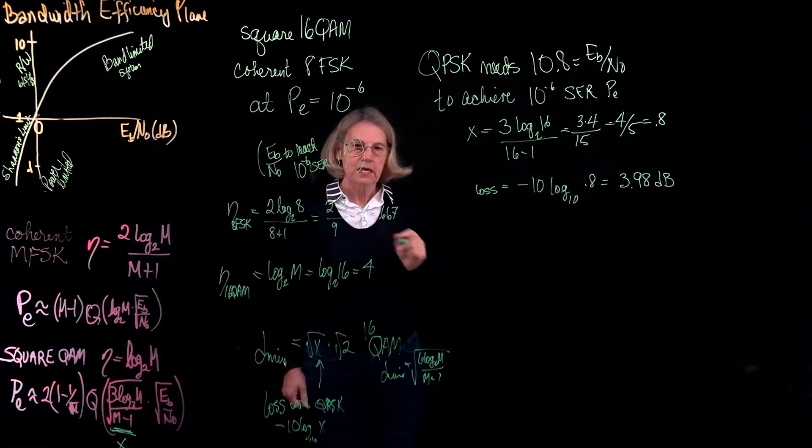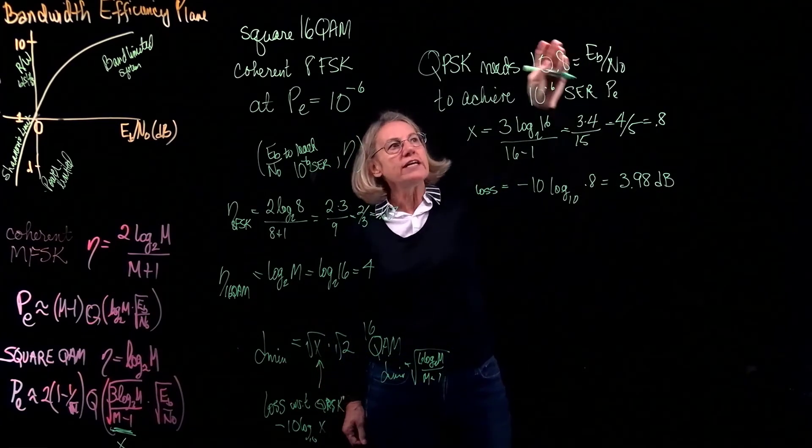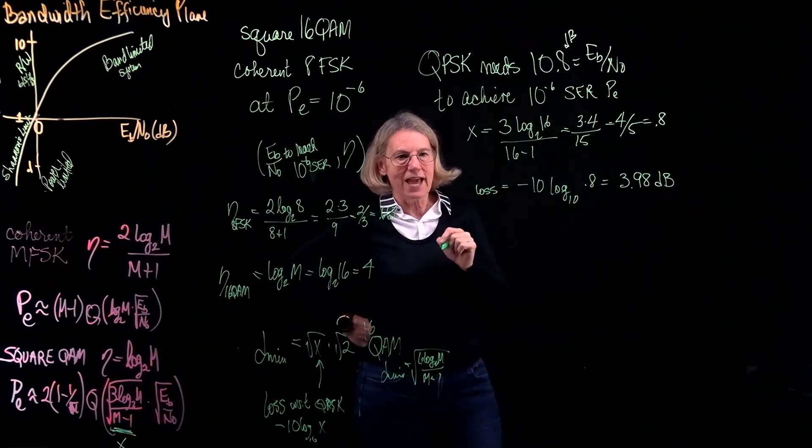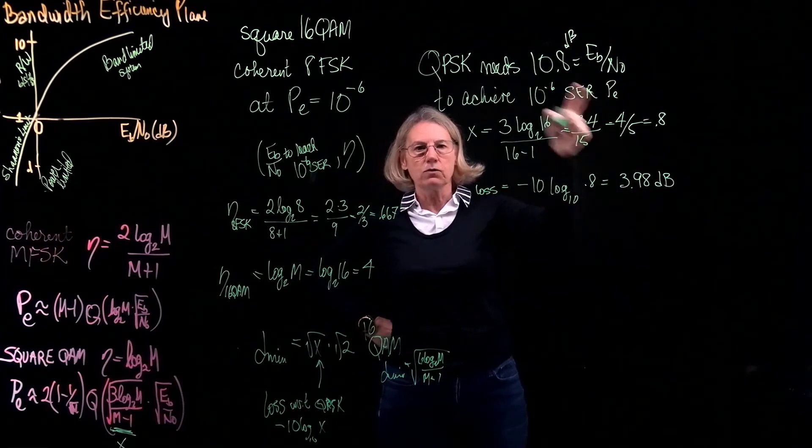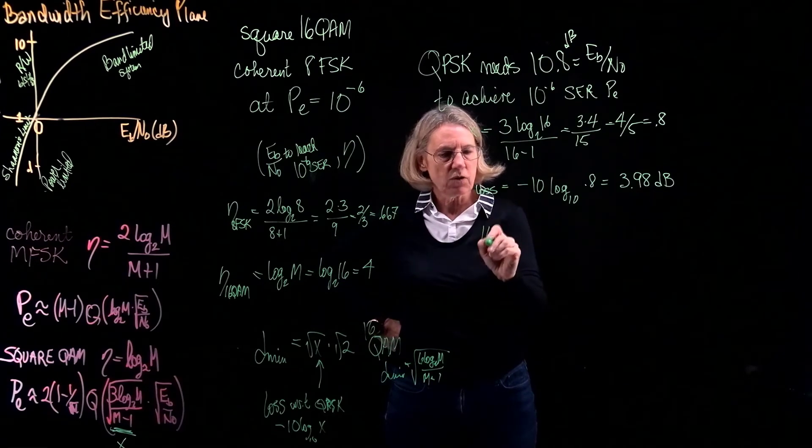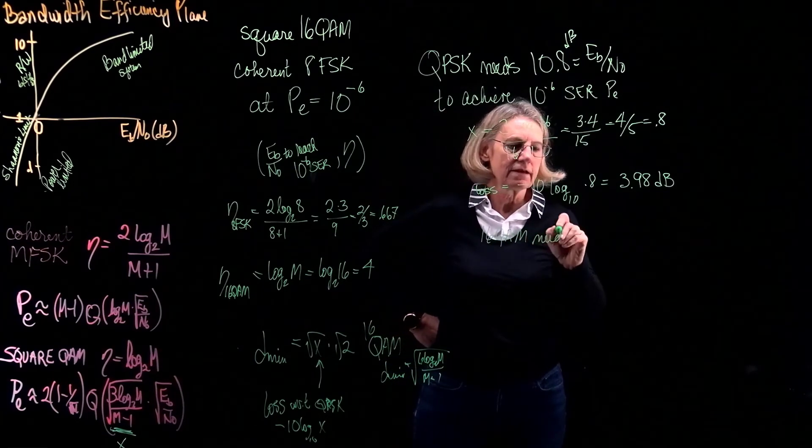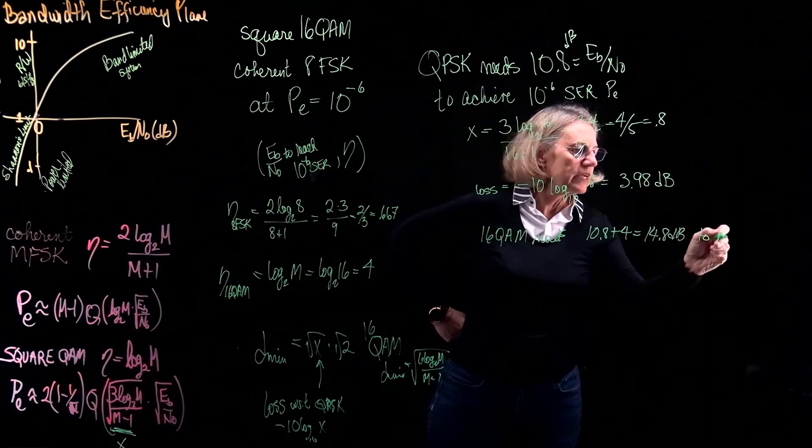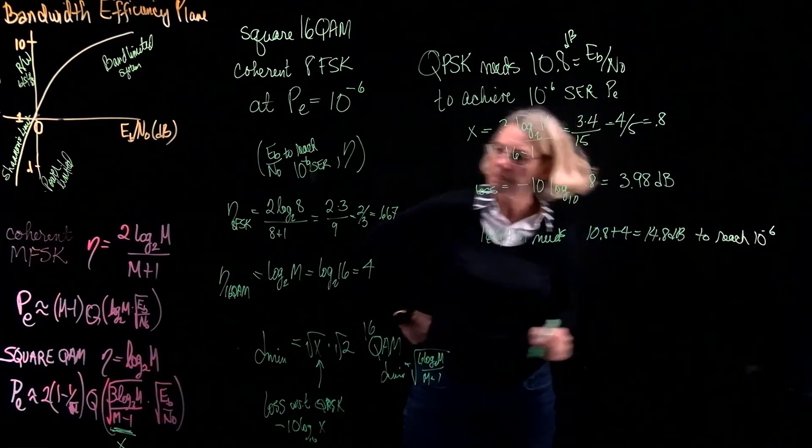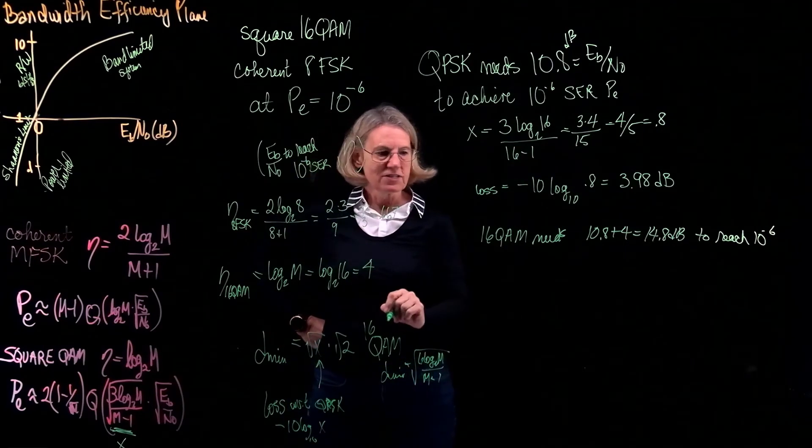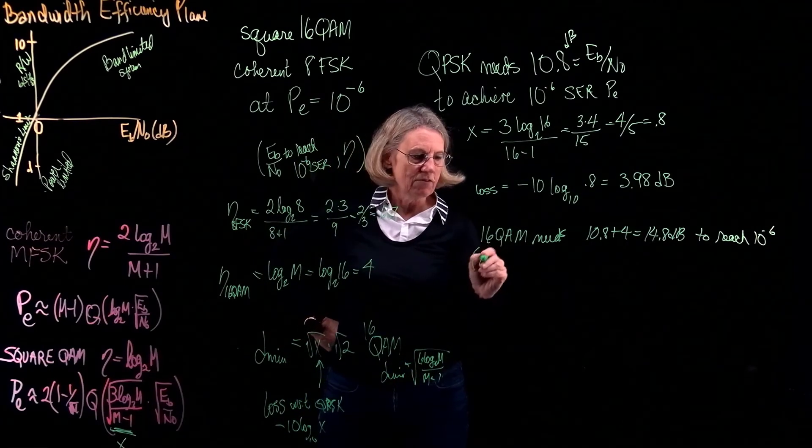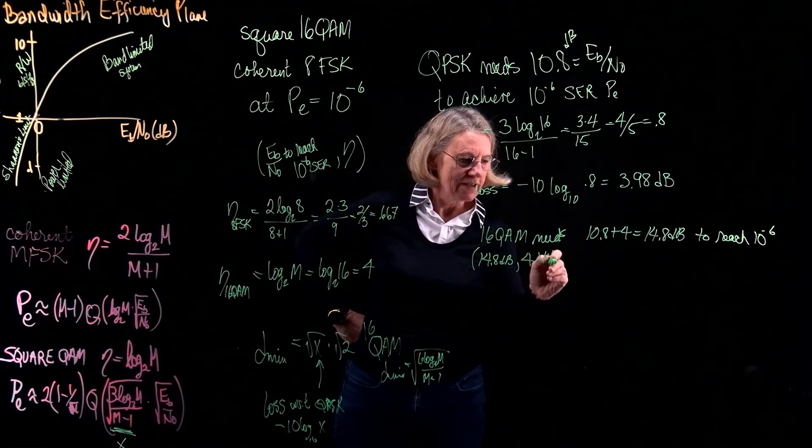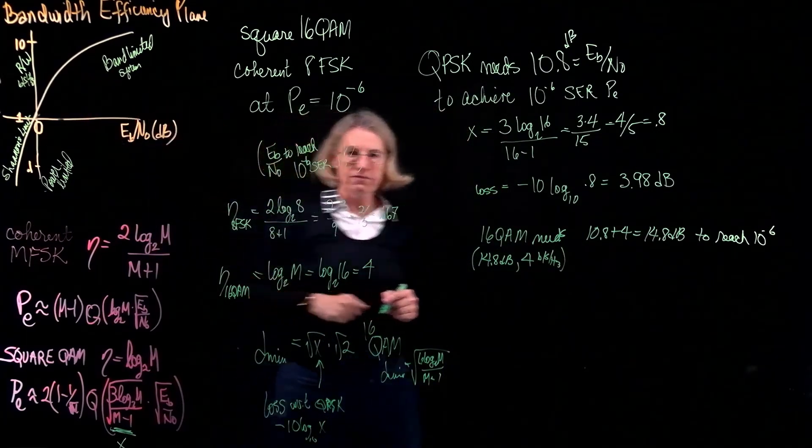So what do I do with this? Well, it's a loss. So that means if I only need 10.8 dB to get 10 to the minus 6 for QPSK, I'm going to need an extra 4 dB in order to get it with QAM. So that means that 16 QAM needs 10.8 plus 4 or 14.8 dB to reach 10 to the minus 6. So now I have the second coordinate. So the coordinate for 16 QAM ends up to be 14.8 dB, 4 bits per second per hertz.